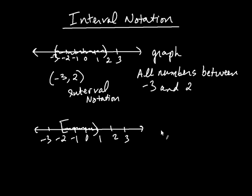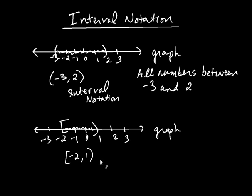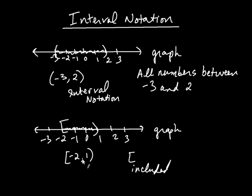Let's represent this set of numbers using interval notation. We're going to write a bracket, negative 2, comma, and then a 1. What is the meaning of the bracket on the negative 2? That means negative 2 is also included — bracket means included. So negative 2 is included in the set. However, because we're using a parenthesis on the 1, the 1 is not included. So we have all the numbers between negative 2 and positive 1, also including the number negative 2. This is the interval representation of this graphed set.